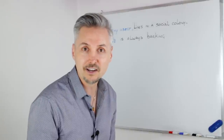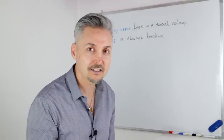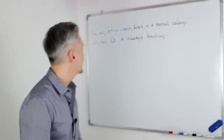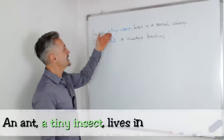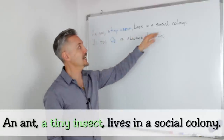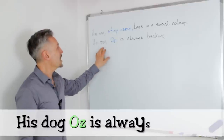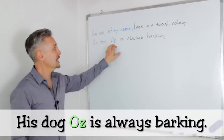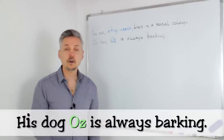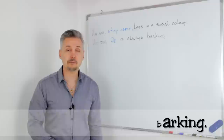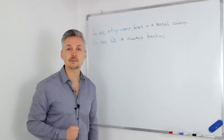Hello there, this is Mark. Are you ready for a new lesson? Great, let's start. An ant, a tiny insect, lives in a social colony. His dog, Oz, is always barking. In this lesson, we're going to talk about appositives, so stay tuned.